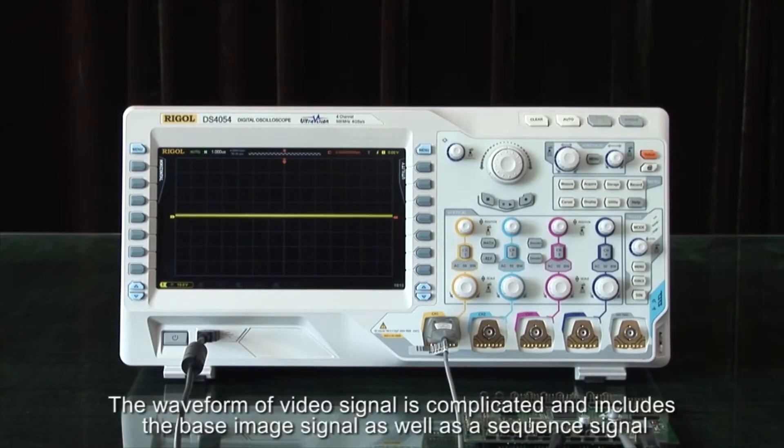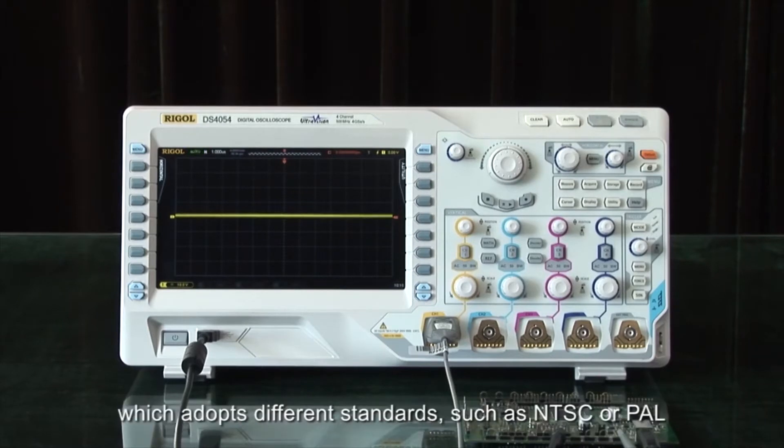The waveform of the video signal is complicated and includes the base image signal as well as the sequence signal which adopts different standards such as NTSC or PAL.